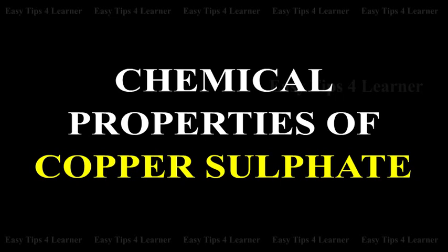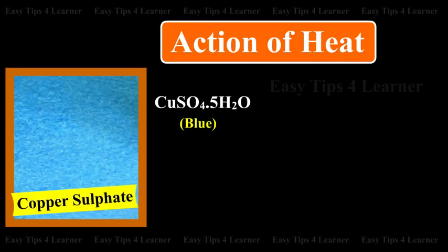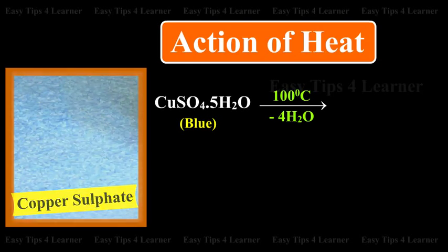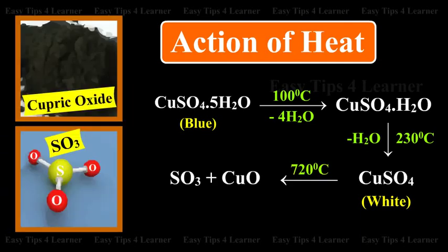Chemical properties of copper sulfate. Action of heat: On heating, blue copper sulfate loses its water of crystallization and forms anhydrous copper sulfate, which is white in color. On further heating, it decomposes at 720 degrees Celsius to give cupric oxide and sulfur trioxide.